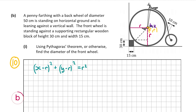We have a coordinate on the circle: the block is 15 centimeters in on the ground and 30 centimeters up on the vertical wall, giving us the coordinate (15, 30). So x equals 15 and y equals 30, and we substitute those in to solve for r.